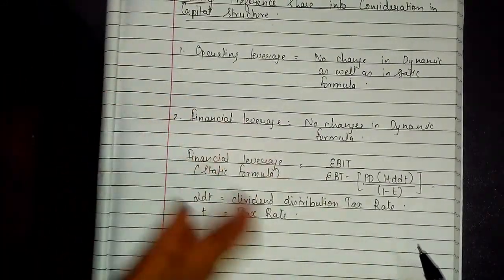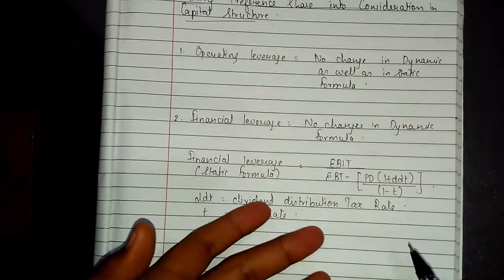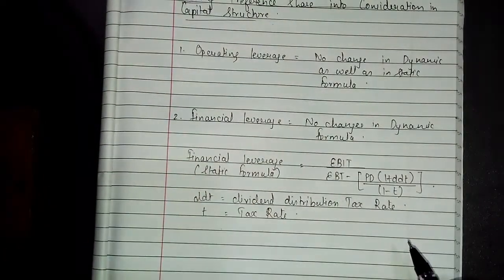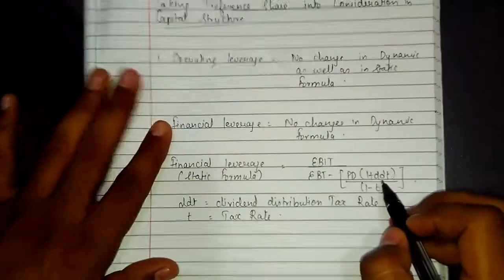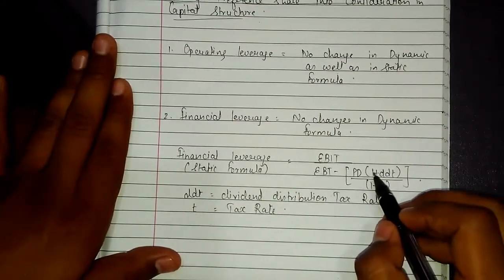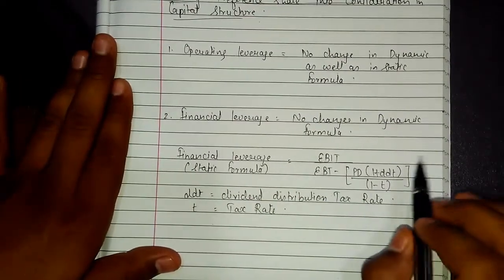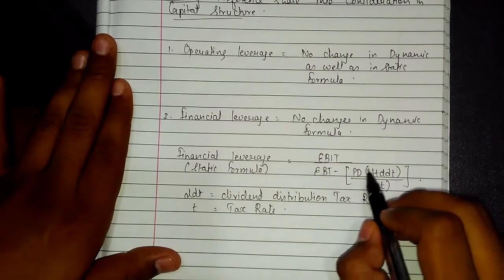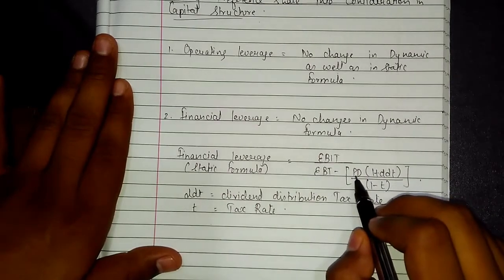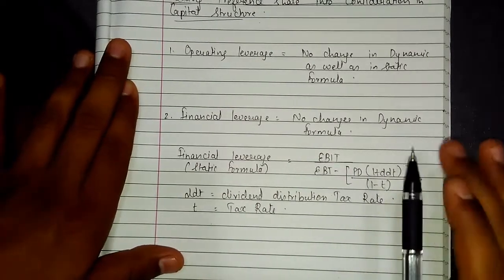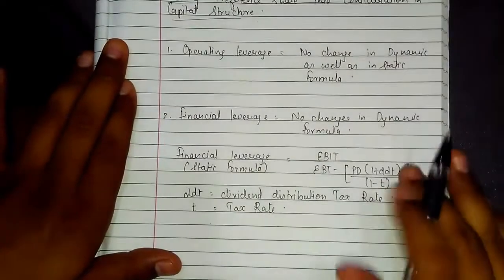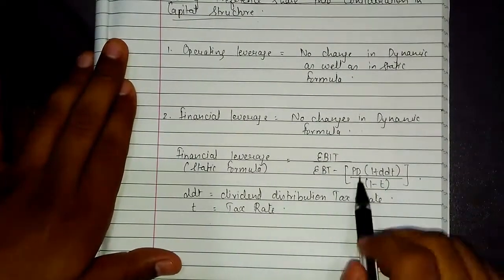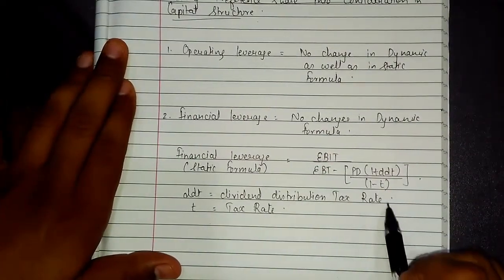If DDT is given as zero in the question, then (1 plus 0%) means the preference dividend percentage or amount will remain the same, divided by (1 minus tax). This will be clear when solving sums — it is not very difficult.